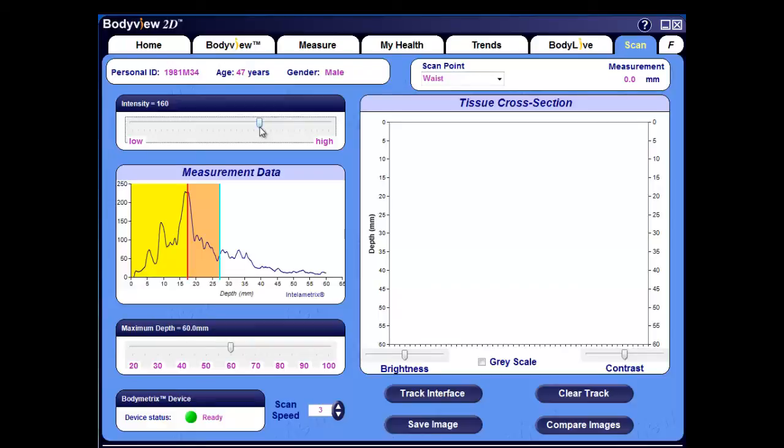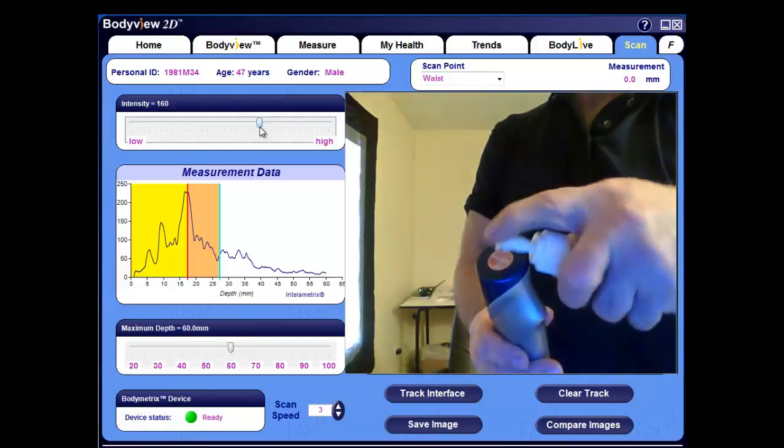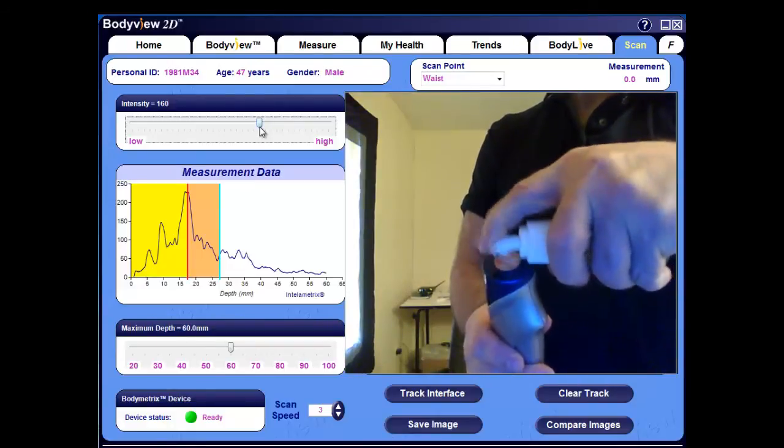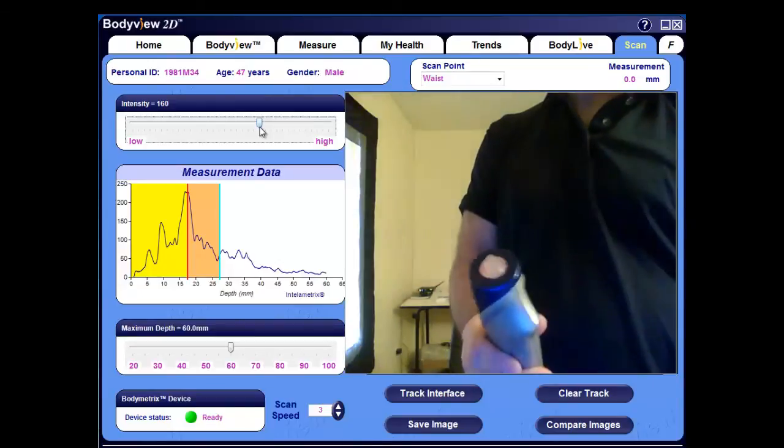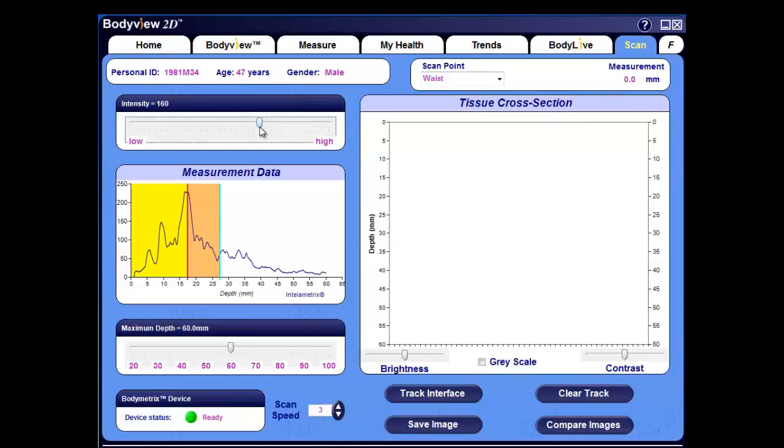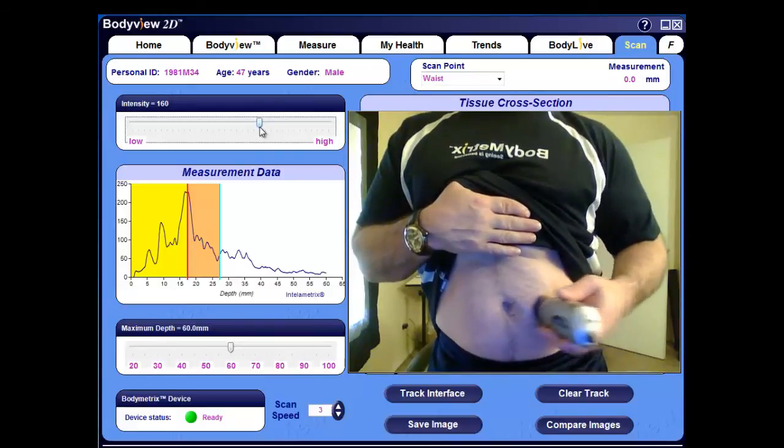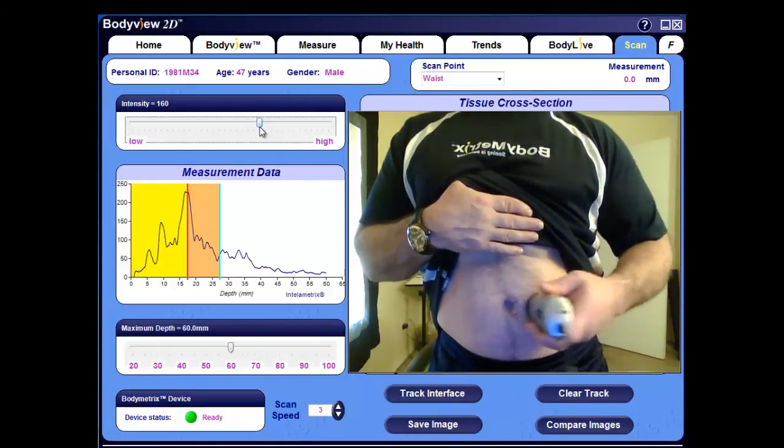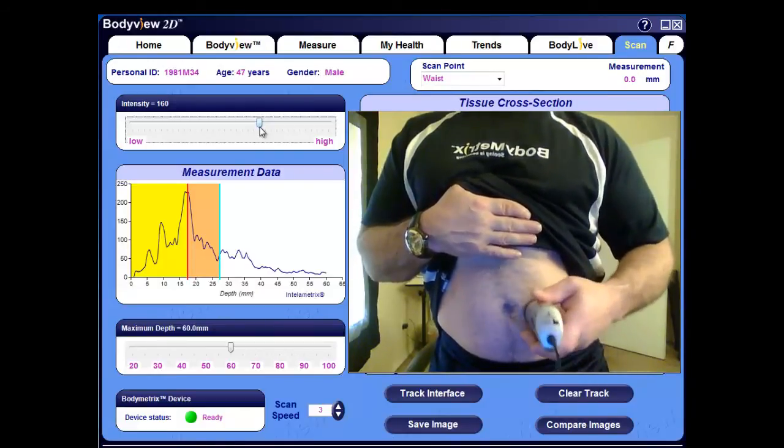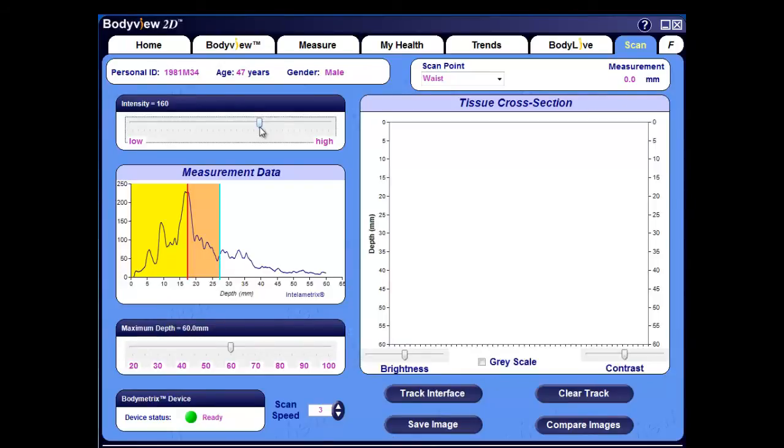Next, you'll apply a quarter-sized amount of gel to the head of the BodyMetrics device, as shown. Beginning one inch to the right of the umbilicus, spread the gel approximately three to four inches horizontally towards the right side without pressing the button, as shown. You're moving the device back and forth to ensure it glides smoothly on the skin without binding or sticking.